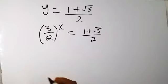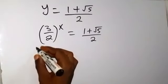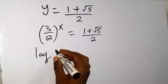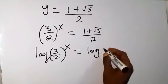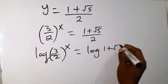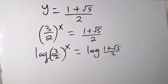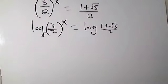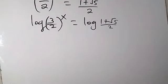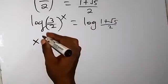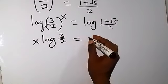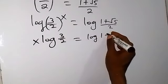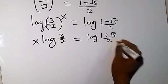From here we can take the log on both sides. When we take the log on both sides, we have log of 3 over 2 raised to power x equals log of 1 plus root 5 over 2. We can apply the law of logarithm — this x can come to the front. And from there we have x log 3 over 2 equals log of 1 plus root 5 over 2.